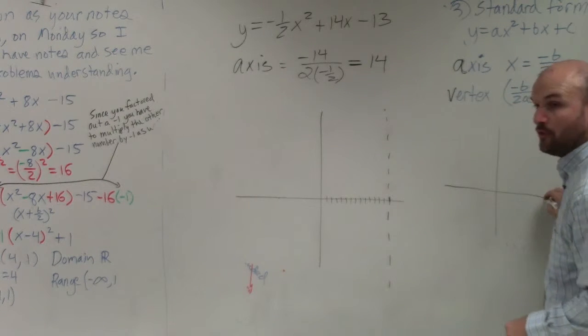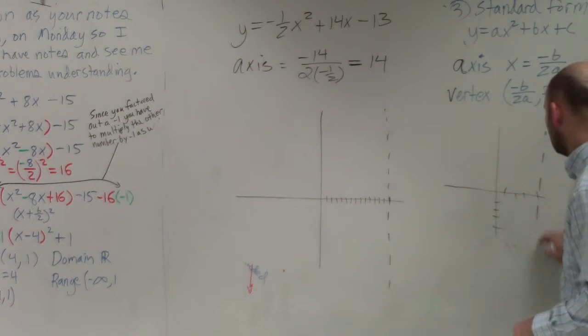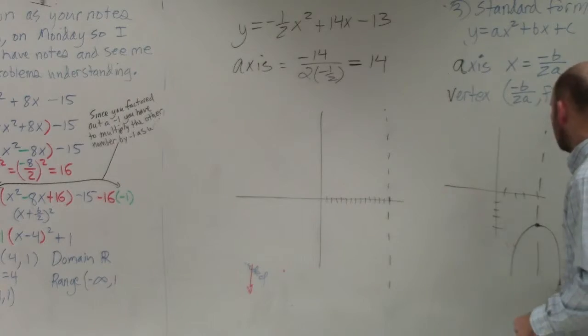Right? That one had a 4, negative 4. Right? 1, 2, 3, 4. 1, 2, 3, 4. That looks something like that.